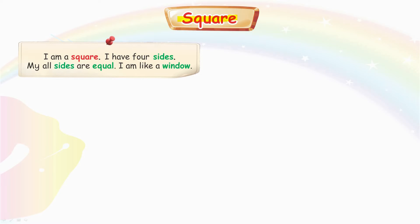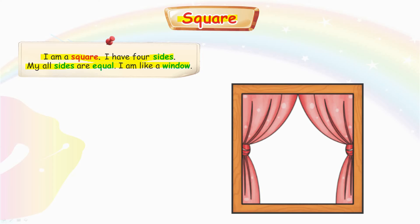I am a square. I have four sides. My all sides are equal. I am like a window.